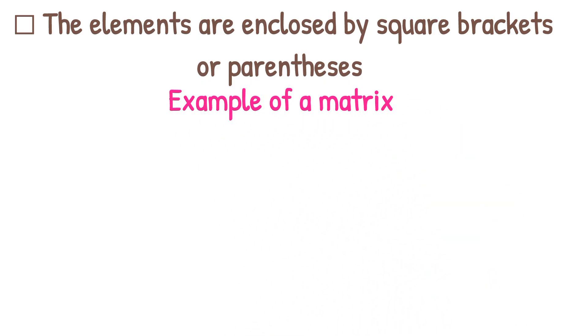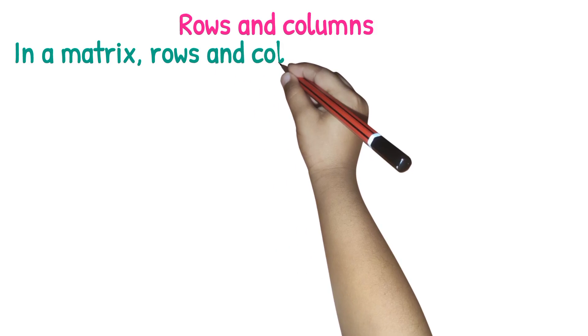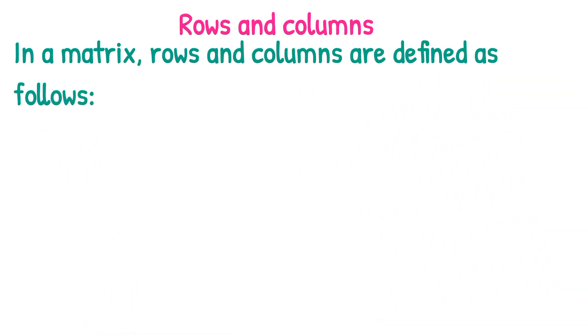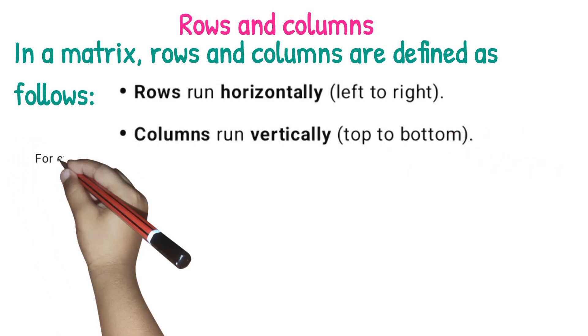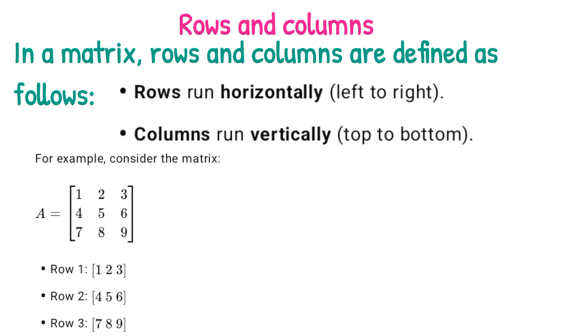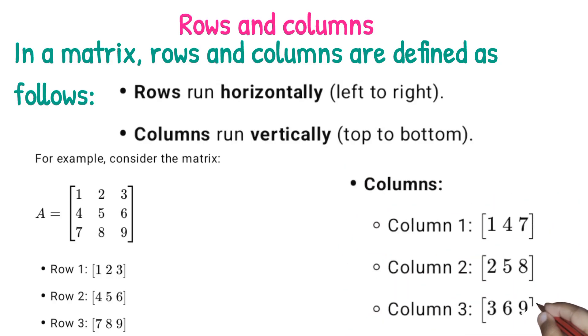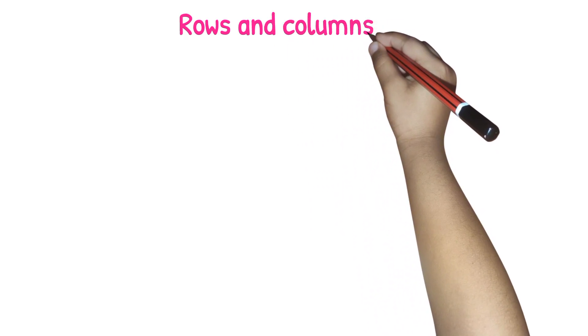Example of a matrix. We have matrix A which is two columns and two rows. Now let us go to what we call the rows and columns. In a matrix, rows run horizontally and columns run vertically, that is top to bottom. Look at this example here. This is a three row and three column matrix, a three by three matrix.